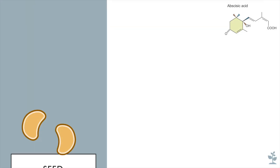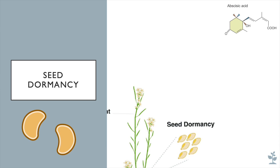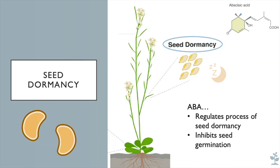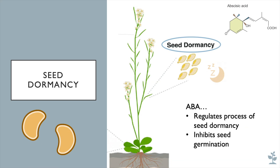One important process that ABA regulates is seed dormancy, which is the state in which seeds are prevented from germinating under harsh environmental conditions. This means that even if all the necessary environmental conditions for growth are satisfied, a viable seed will not germinate and will undergo this process of seed dormancy. This will maximize the survival of seedlings by preventing germination under unbearable conditions. ABA is known to induce and maintain this process of seed dormancy and inhibits seed germination.